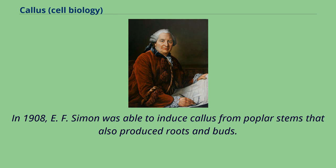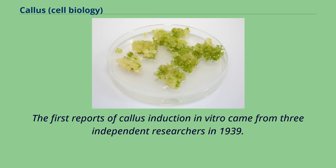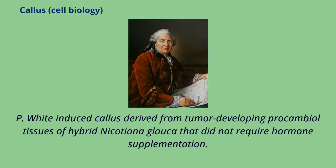In 1908, EF Simon was able to induce callus from poplar stems that also produced roots and buds. The first reports of callus induction in vitro came from three independent researchers in 1939. P. White induced callus derived from tumor-developing procambial tissues of hybrid Nicotiana glauca that did not require hormone supplementation.